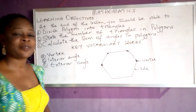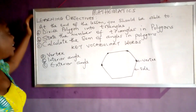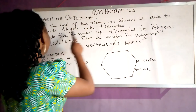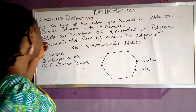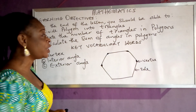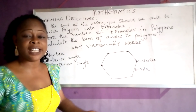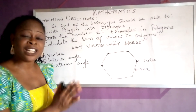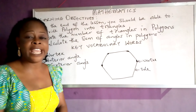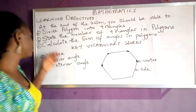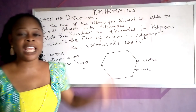Good morning class. How are you today? As you can see, the learning objective for today is: at the end of the lesson, you should be able to, one, divide a polygon into triangles; two, state the number of triangles in any given polygon; and three, calculate the sum of angles in a polygon.